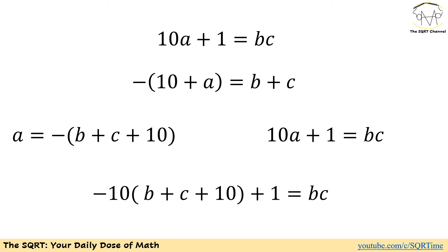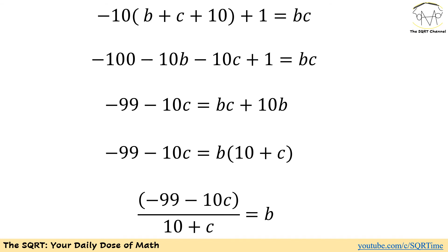On the other hand, we have 10a + 1 equals bc. I'm going to replace the value that I found for a and it simplifies to -10(b + c + 10) + 1 = bc. Now I have an equation that has b and c. Let's see what we can do with it. We have -10(b + c + 10) + 1 = bc.